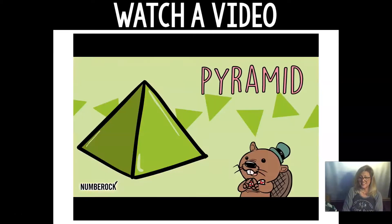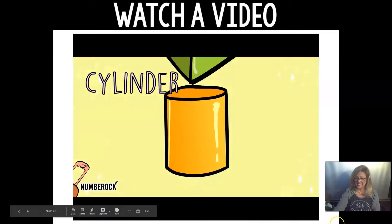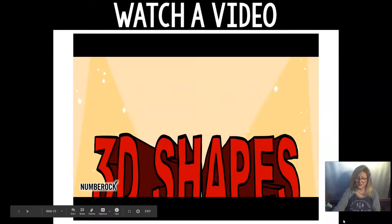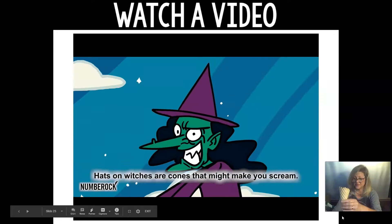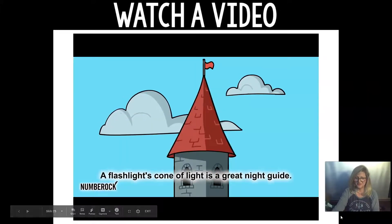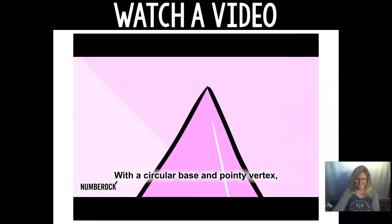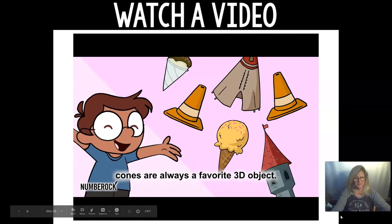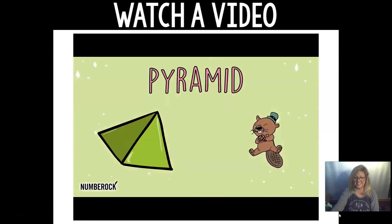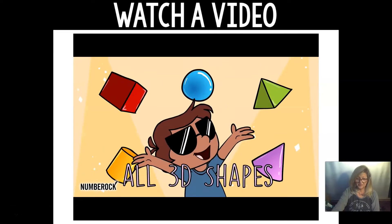Sphere, cylinder, pyramid, cube, cone — all 3D shapes! Waffle cones can hold that ice cream. Perhaps some witches have cone hats that might make you scream. Orange cones can show dangers in the road. Teepees are cones that make a great abode. Castle turrets are cones to watch outside. Cone-shaped cups may hold something to eat. With a circular base and a pointy vertex, cones are always a favorite 3D object. Sphere, cylinder, pyramid, cube, cone — all 3D shapes!